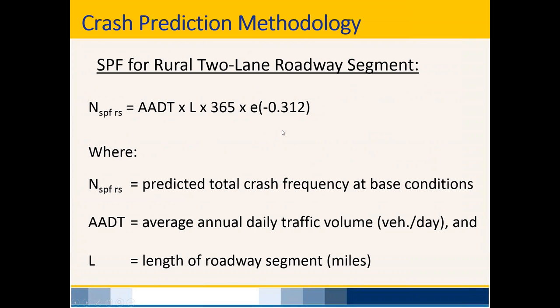Different SPFs are developed for different roadway types, so you have to find and apply the correct SPF. Until Kentucky can develop Kentucky-specific SPFs, we'll use the SPFs from the Highway Safety Manual found in Chapters 10, 11, and 12. The equation shown here is the SPF for rural two-lane roadways from the HSM. Rural two-lane is our most common roadway type in Kentucky. ADT and length of roadway segment are the two variables.